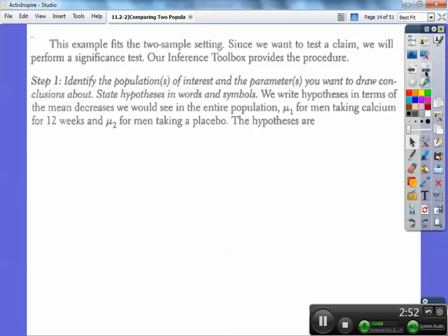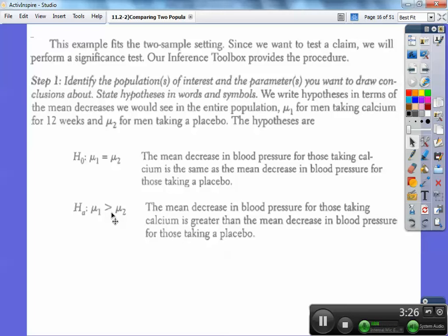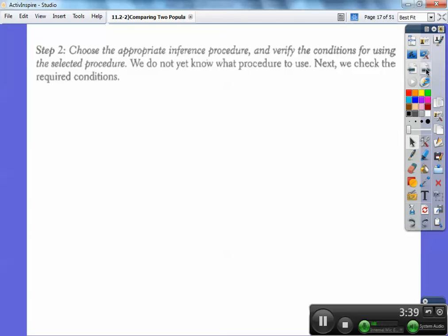State the hypotheses in words and symbols. We'll write the hypotheses in terms of the mean decrease we would see in the entire population. μ₁ for the men taking the calcium for 12 weeks and the other one is for the placebo. The hypotheses are, your null hypothesis is there's no change. So they would be equal to each other. The mean decrease in blood pressure for those taking calcium would be the same for those taking the placebo. And so we want to know is it greater than because we want to know did the calcium ones actually decrease. And remember decrease was a positive. So was it greater than the placebo guys? That's what this says right here. This is our null hypothesis because we're going to show you later how to do it in the calculator. We've got to remember that.